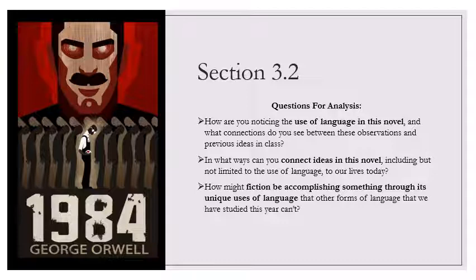He paused and signed to the man in the white coat. Winston was aware of some heavy piece of apparatus being pushed into place behind his head. O'Brien had sat down beside the bed so that his face was almost level with Winston's. Three thousand, he said, speaking over Winston's head to the man in the white coat. Two soft pads, which felt slightly moist, clamped themselves against Winston's temples. He quailed. There was pain coming, a new kind of pain. O'Brien laid a hand reassuringly almost kindly on his. This time it will not hurt, he said. Keep your eyes fixed on mine. At this moment there was a devastating explosion, or what seemed like an explosion, though it was not certain whether there was any noise.